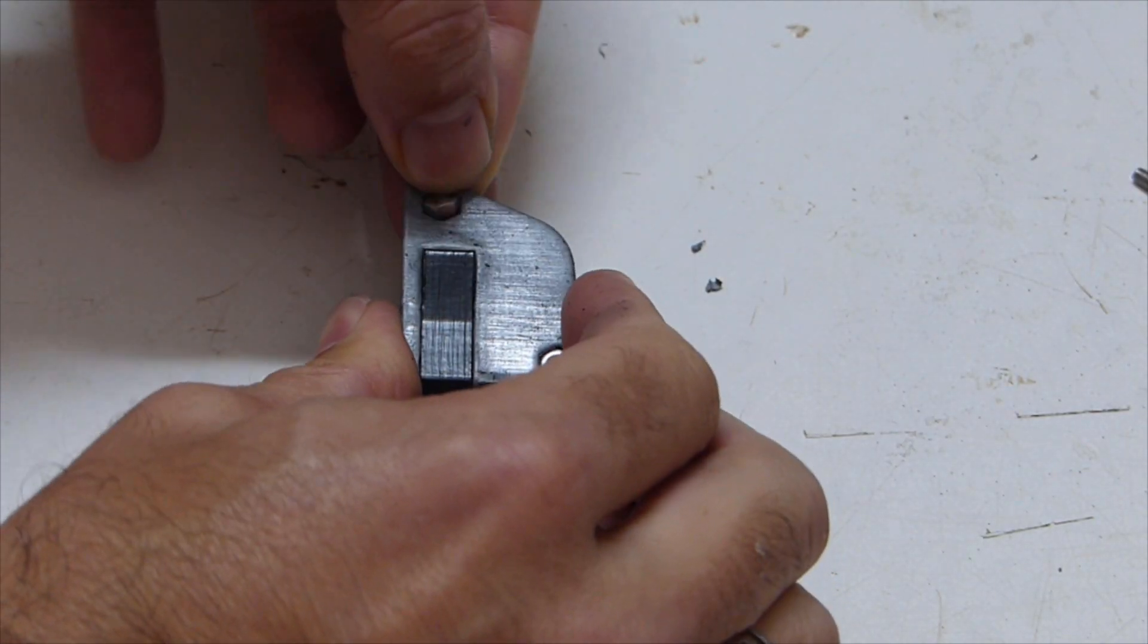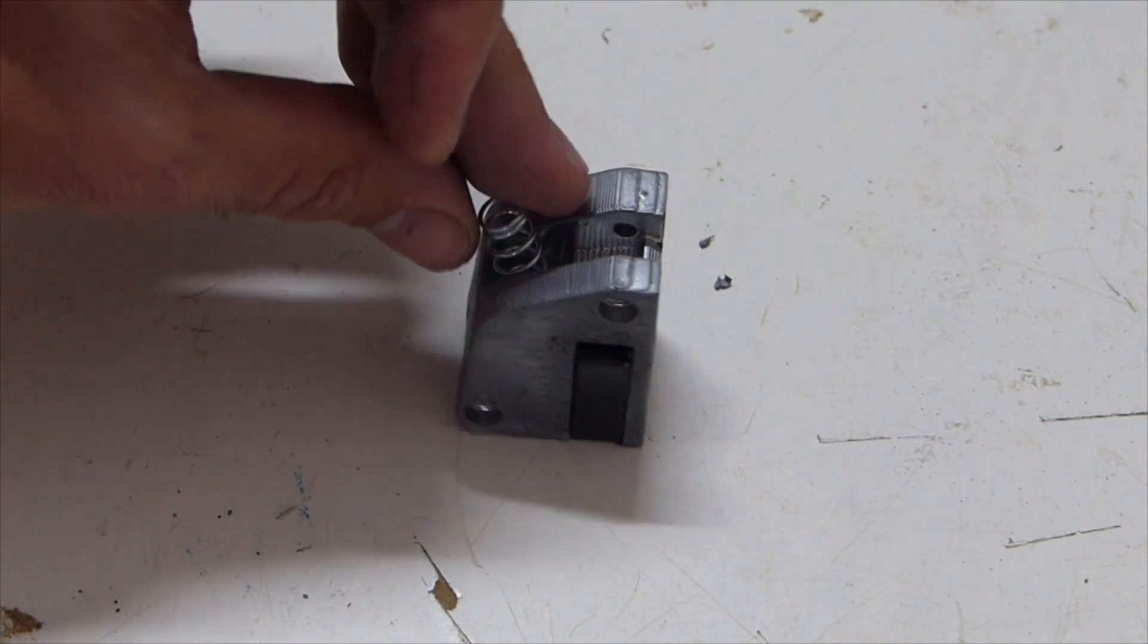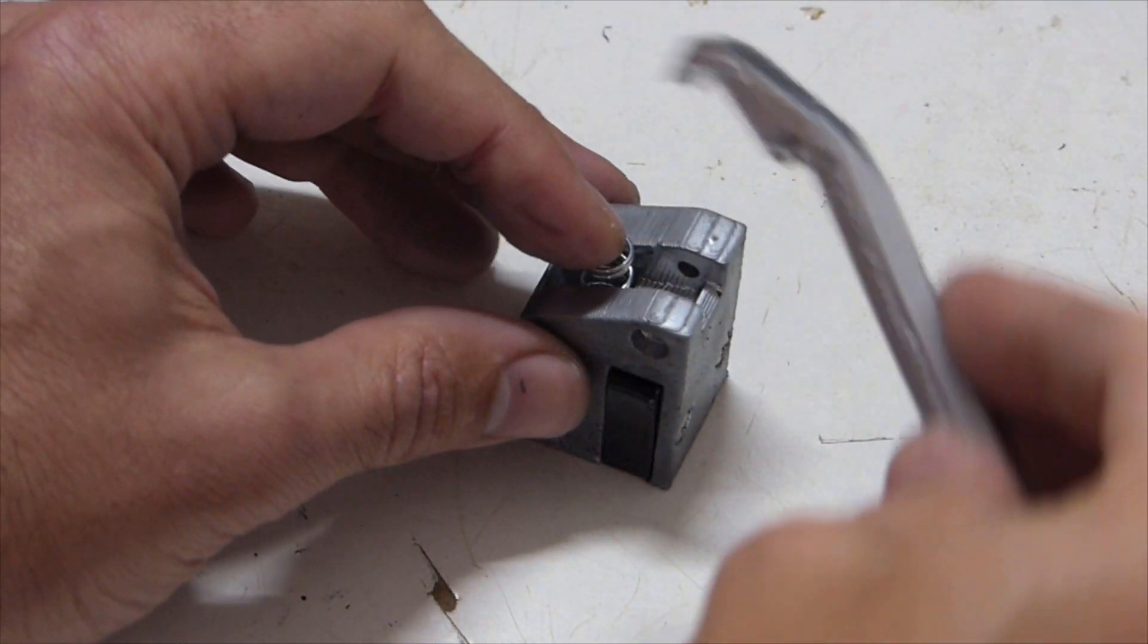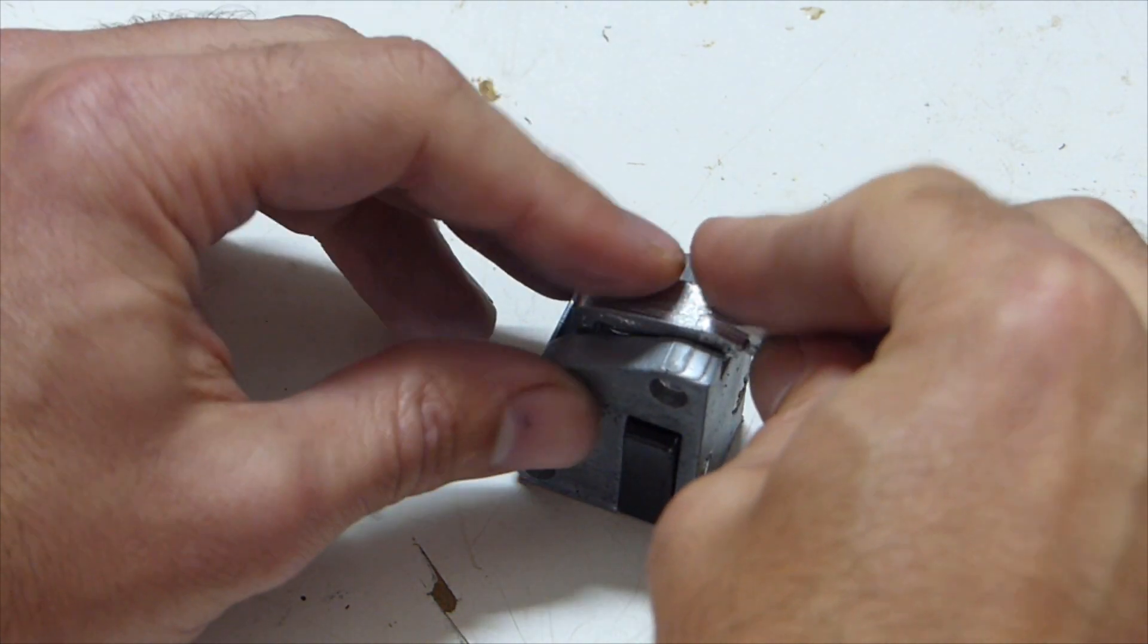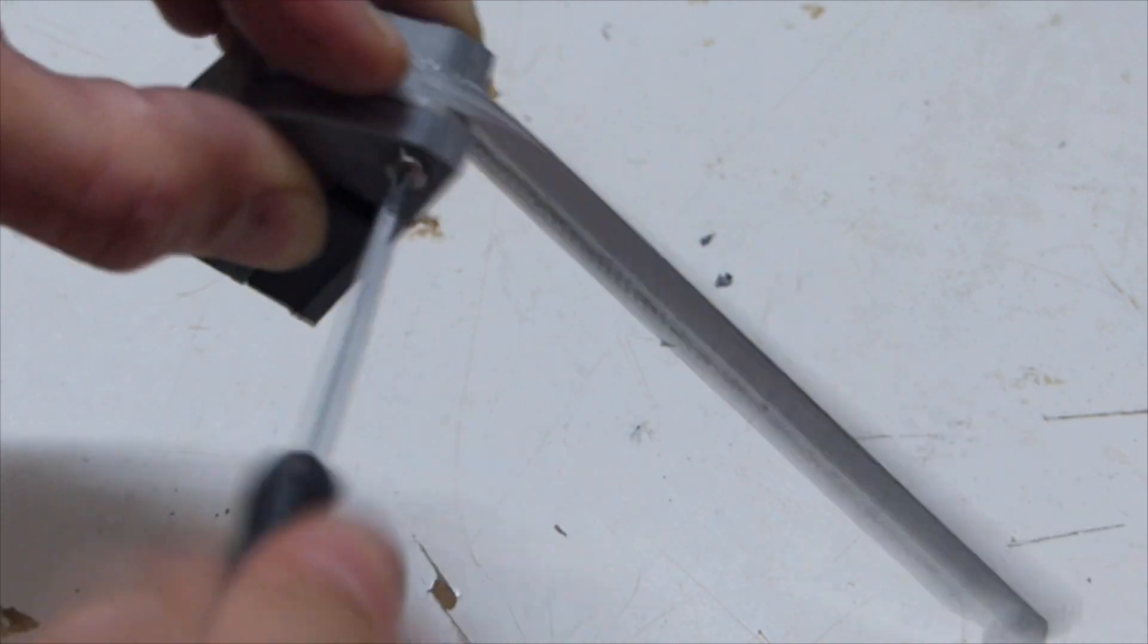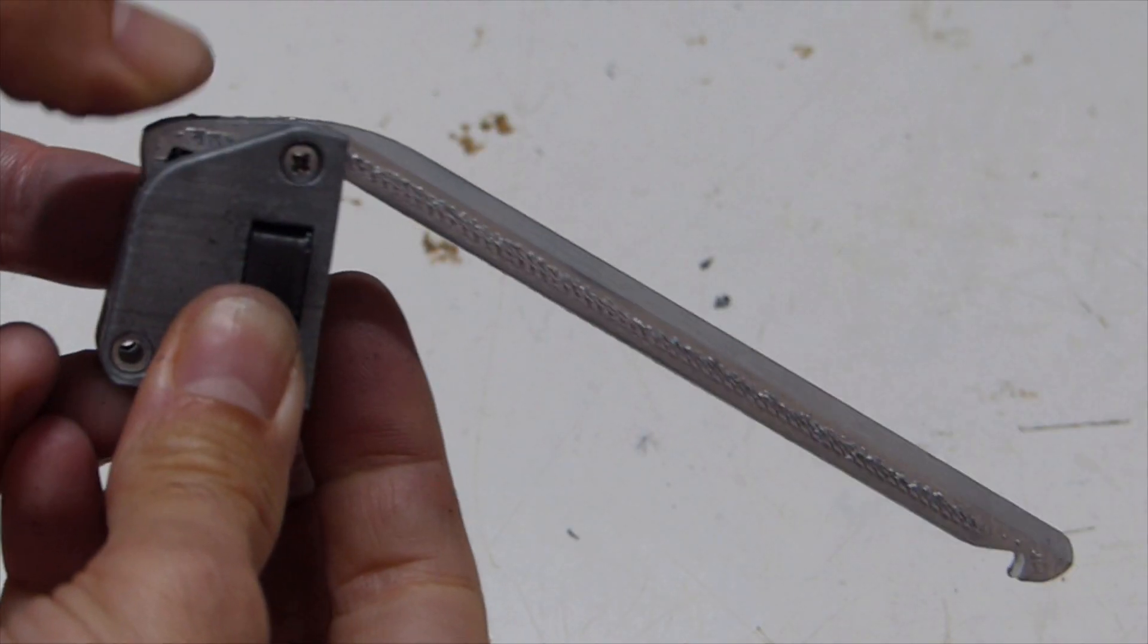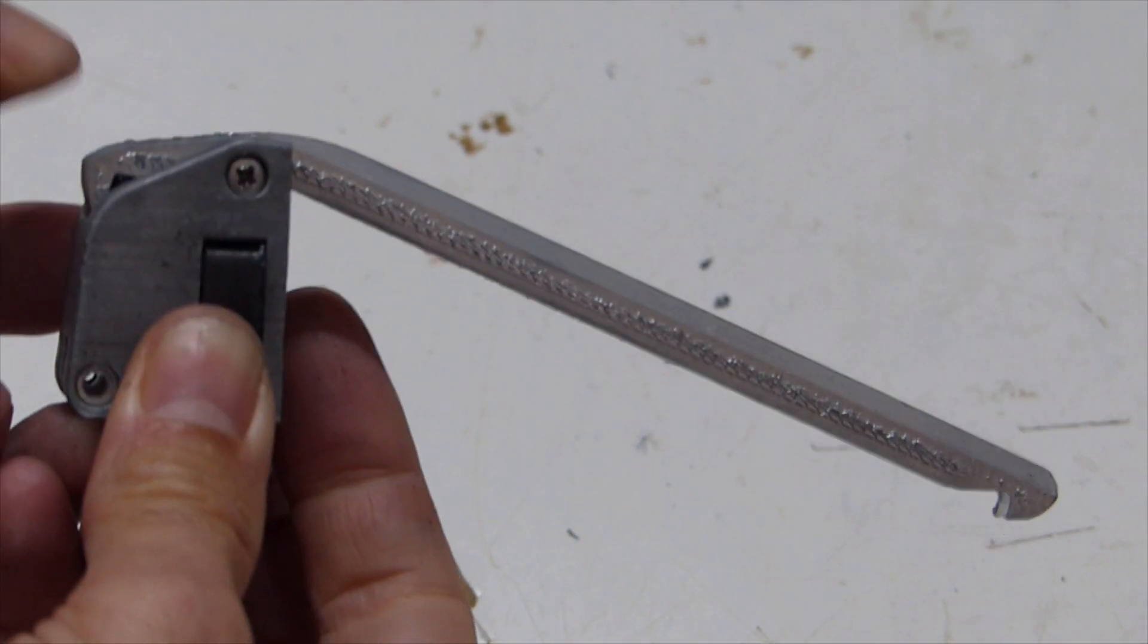Two M3 nuts are then inserted in the main body and another spring is placed in the center of the main body. The arm part is pushed against the spring in its slot and secured in place with the M3 20mm bolt. It is then tested to see that it springs back. This arm will hold the arrows in place when loaded.